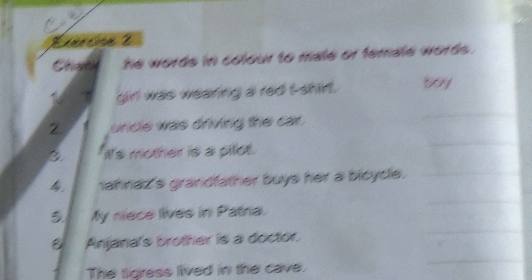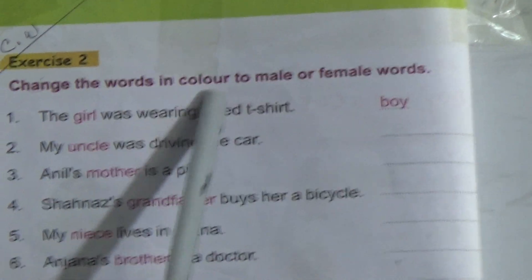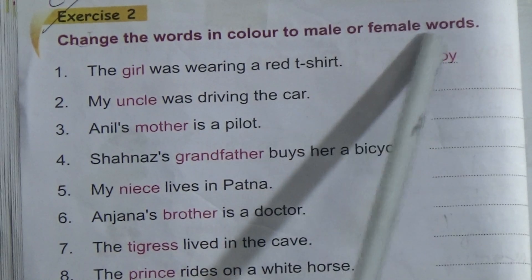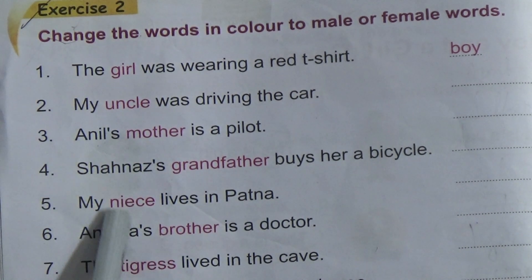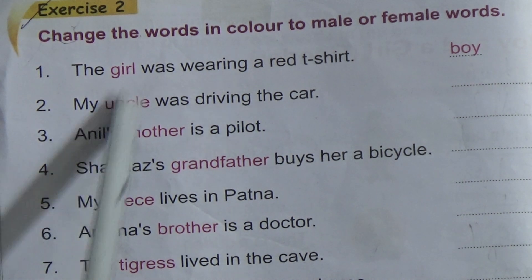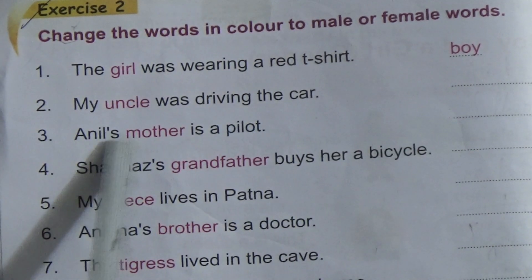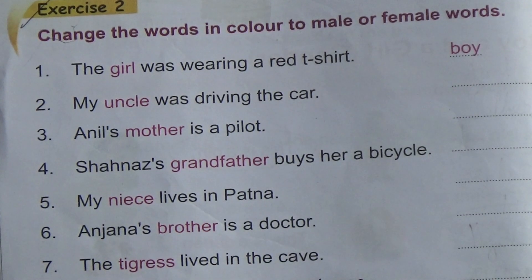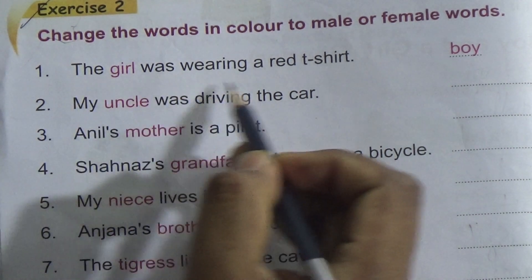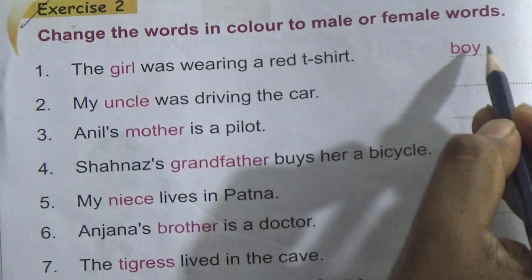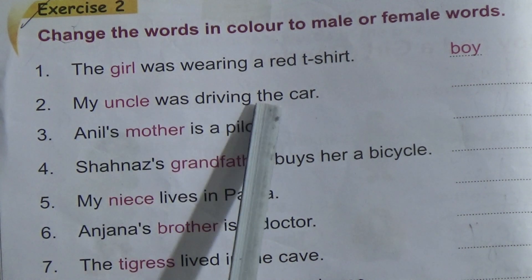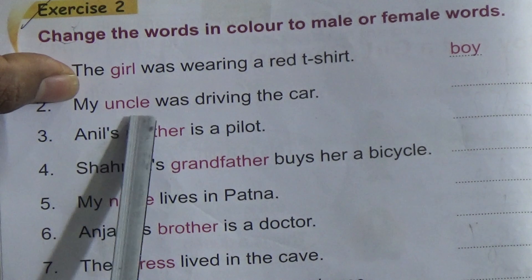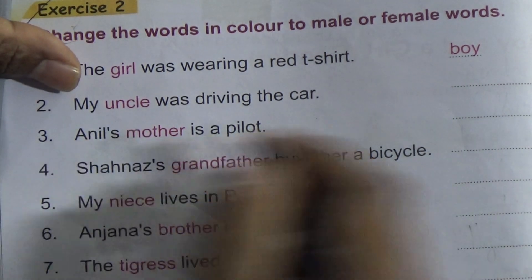And this is Exercise 2: Change the words in color to male or female words. That means we have to read all these words and convert each into its female or male form — if it is male, convert to female, and if it is female, convert to male. The girl was wearing a red shirt — girl's male form is boy. My uncle was driving the car — uncle's female form is aunt.